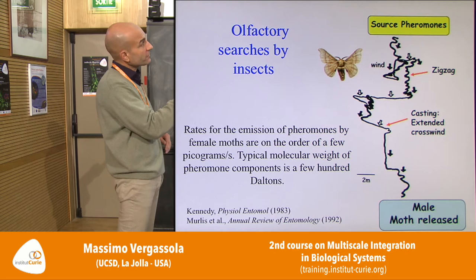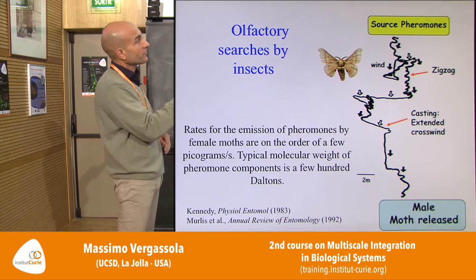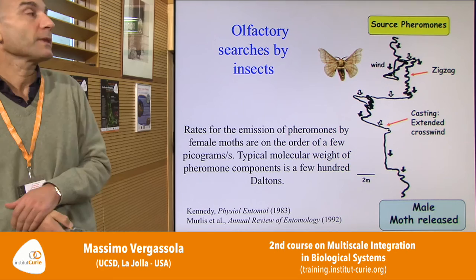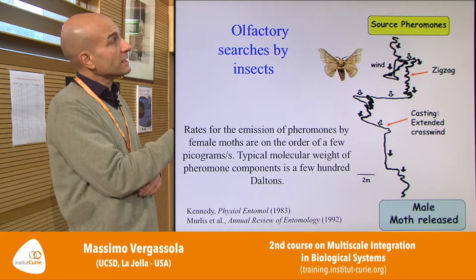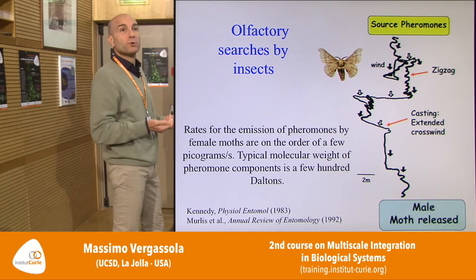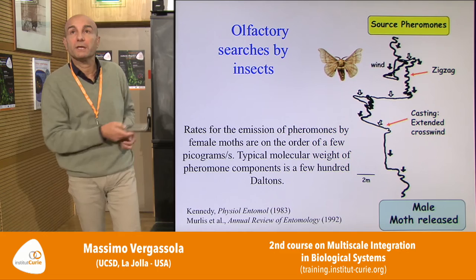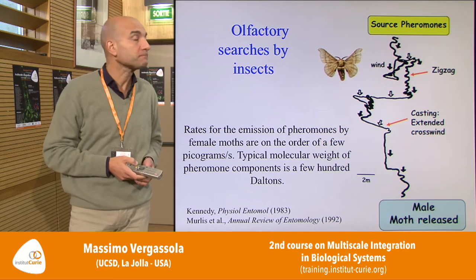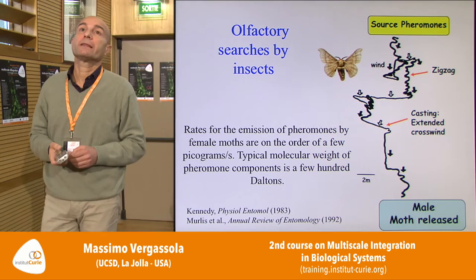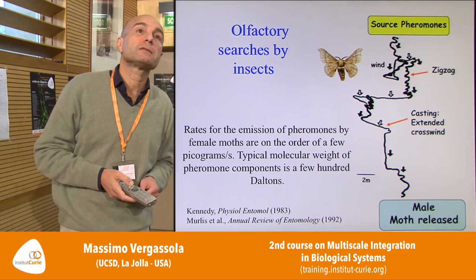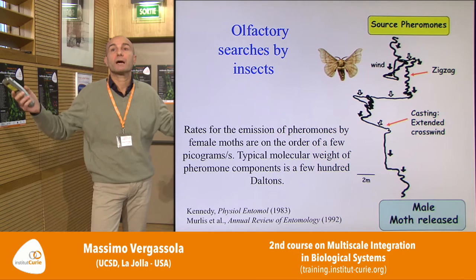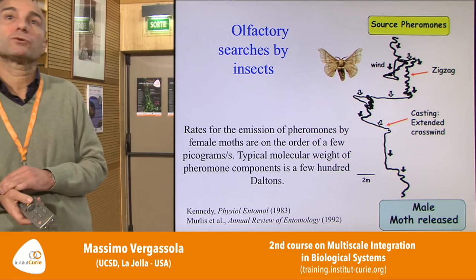The other phase is called casting — phases where the moth cuts the wind at an angle, sometimes cutting perpendicular to the wind, or even going downwind. With these patterns, male moths are able to reach females in timescales of the order of a few minutes. They cover hundreds of meters in the presence of very tiny concentrations, reaching the source in minutes. Evolutionarily it's obvious why they do it — it's about mating, about reproduction.